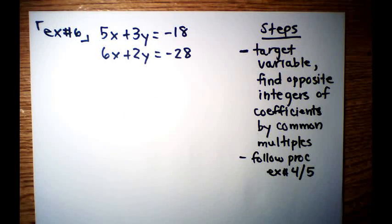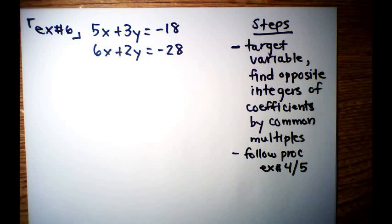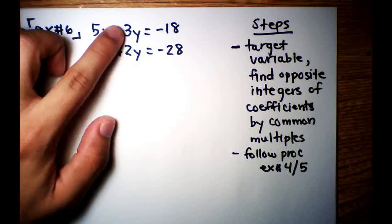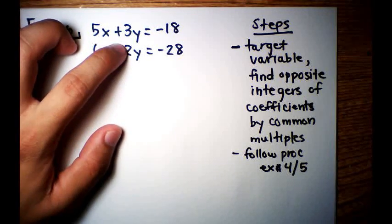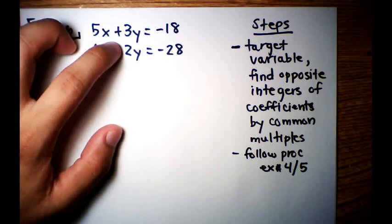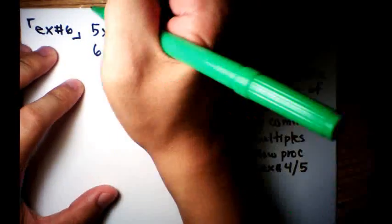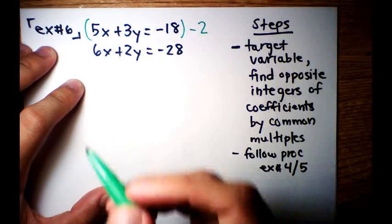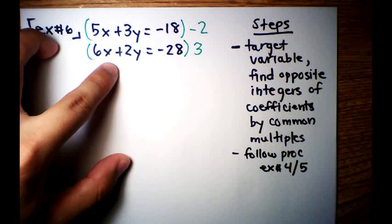Here's one more example for elimination. 5x plus 3y is equal to negative 18, and 6x plus 2y is equal to negative 28. We're still going to do the same procedure as before where we target a variable and find opposite integers. In this case, we're going to try to find common multiples because they're not as easy as examples 4 or 5. My target variable this time is going to be y. They need to be opposite integers — right now this is positive 3 and this is positive 2. Find a common multiple of 3 and 2, which is 6. I need to make sure one is positive 6 and the other is negative 6. So I'm going to multiply the first row by negative 2 and the second row by 3, so that one becomes negative 6 and the other becomes positive 6.